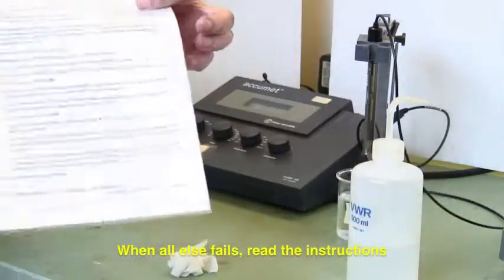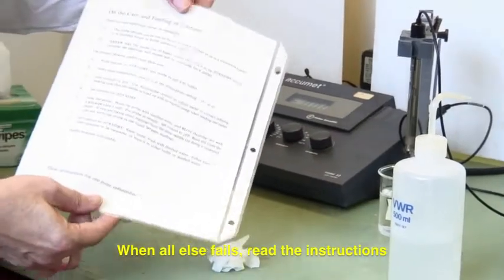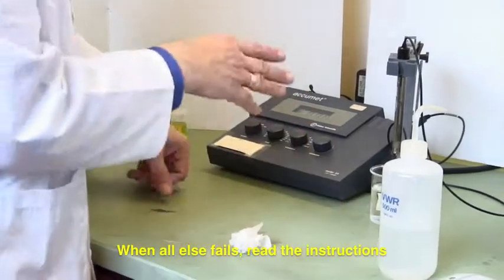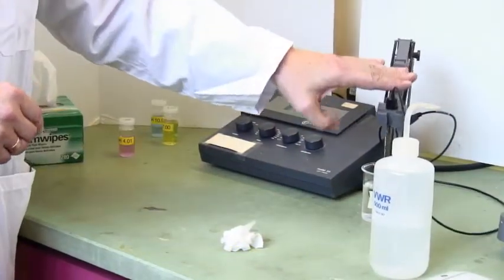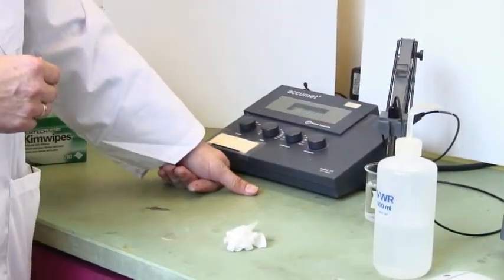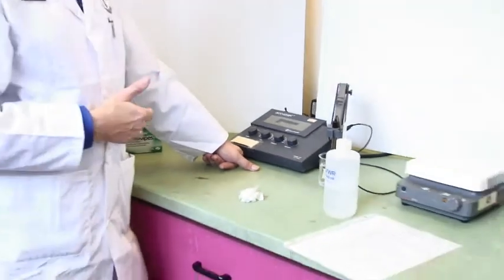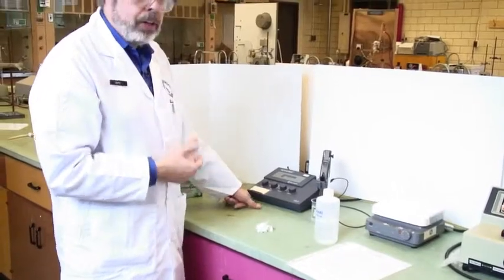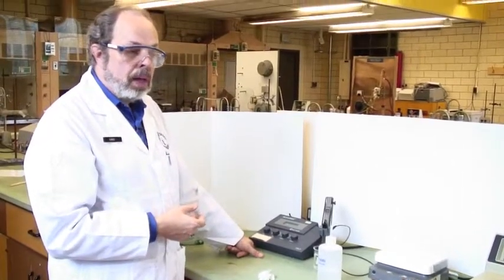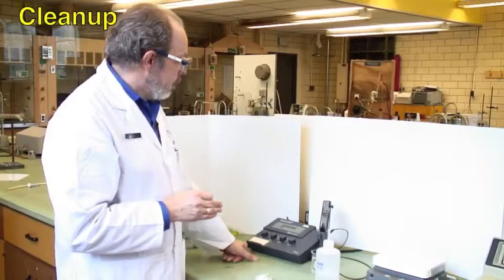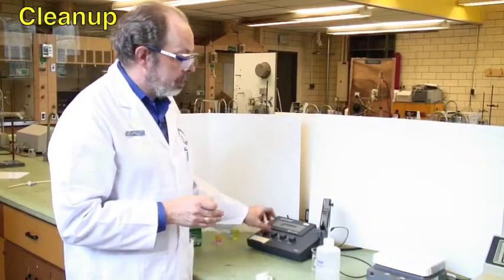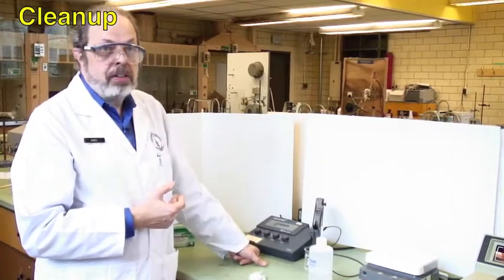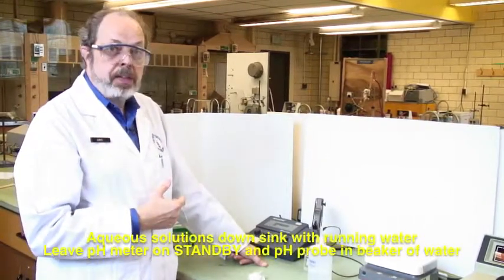If you forget, there is the instruction of how to standardize a pH meter is always going to be nearby to the pH meter, so you won't travel very far. When you want to read, just put your solution under the electrode, turn it onto pH, and it'll tell you what the pH is. At the end of the day, please leave this on standby. Make sure that it is washed off and in a beaker of fresh distilled water for the next person to come along.